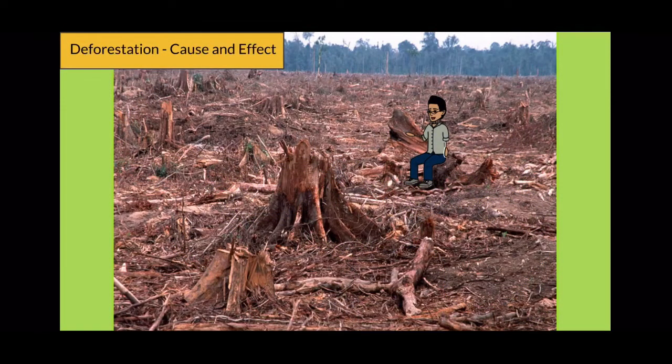Deforestation can occur quickly, such as when a forest is clear cut to make room for an oil palm plantation, or when a fire sweeps through the region.